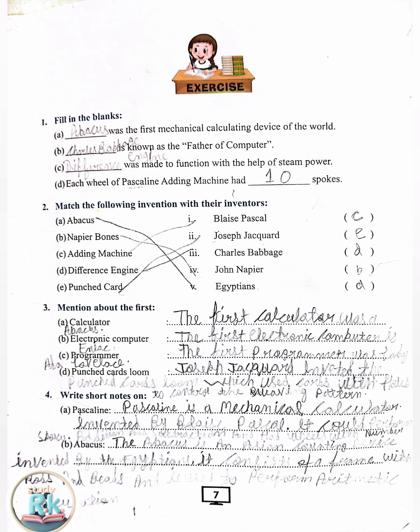C. Difference engine was made to function with the help of steam power. D. Each wheel of Pascaline adding machine had 10 spokes.